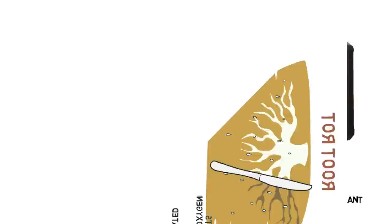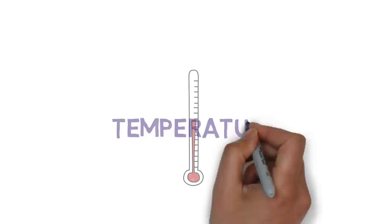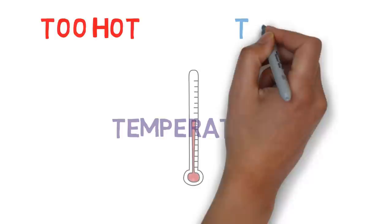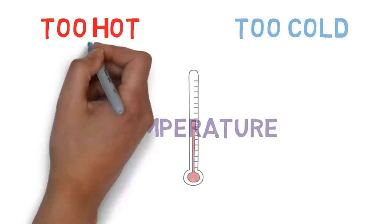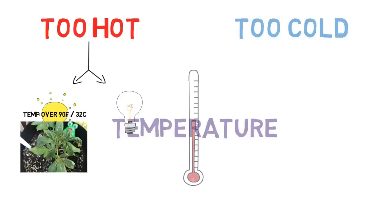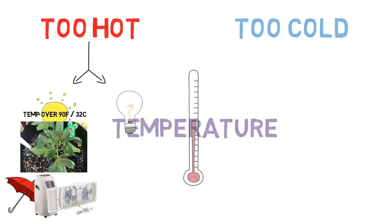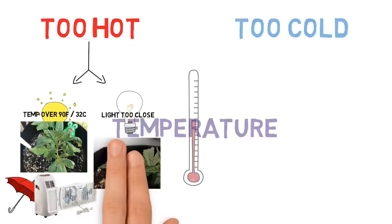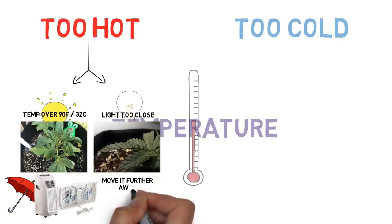On to temperature problems — you basically have too hot and too cold. For too hot, there are two issues: overall heat and spot heating from grow lights. If the overall temperature is over 90 to 100 degrees, the entire plant could wilt and will need to be moved to a cooler location or shade outdoors, or will need an air conditioning unit or better ventilation indoors. If only the top leaves look like they're burning and curling upward, that's a spot heating issue — just move the light further from the plant.